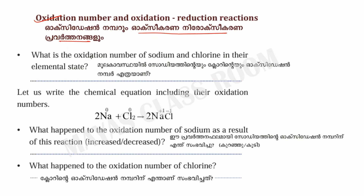What is the oxidation number of sodium and chlorine in their elemental form? When you have chlorine and chlorine together — that is, Cl2 — the oxidation number is zero.